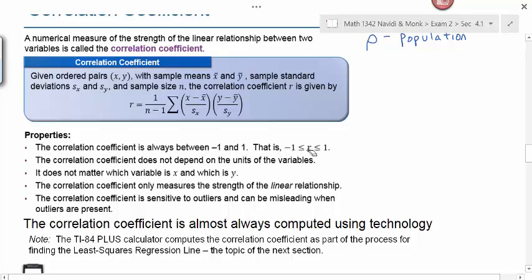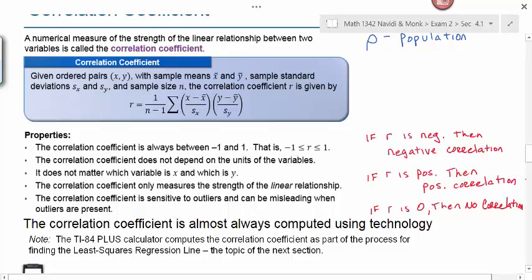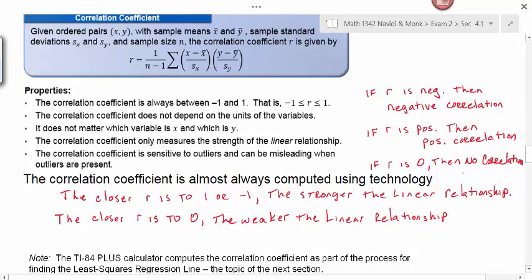The properties of the correlation coefficient you need to be familiar with: the correlation coefficient takes on numerical values between negative 1 and 1. If r is negative, you have a negative correlation. If r is positive, you have a positive correlation. If r is zero, there's no correlation. The closer r is to 1 or negative 1, the stronger the linear relationship. The closer r is to 0, the weaker the linear relationship.